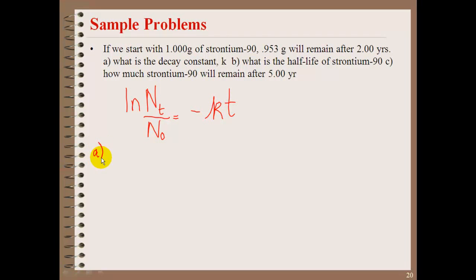We are going to use ln of N sub t over N sub 0 equals minus K times t. In the first part A, we are going to solve for K. And we get negative 1 over t, ln N sub t over N sub 0, which ends up being minus 1 over 2.00, ln 0.953 over 1.000. And we get 0.0241 years raised to negative 1 as our K.